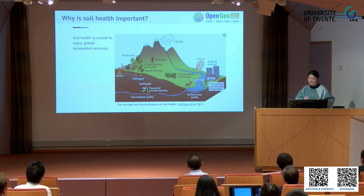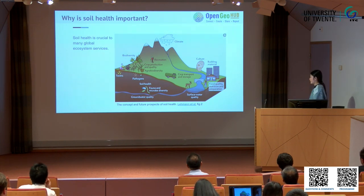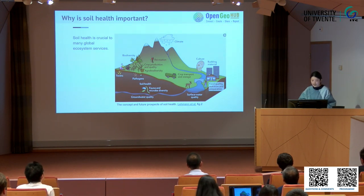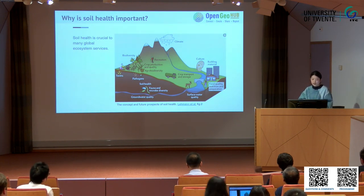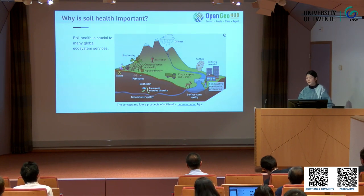Just as the definition said, it's about how soil functions. Healthy soil can provide a lot of crucial ecosystem services for the whole earth — like clean water, crop production, and habitat for a lot of biodiversity — which can improve the resilience of the whole ecosystem to climate change and any other disasters.